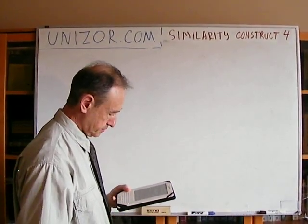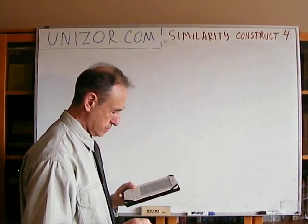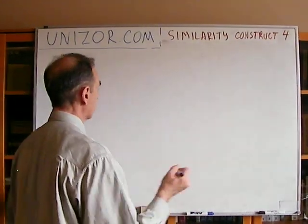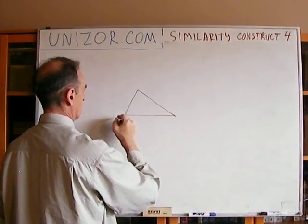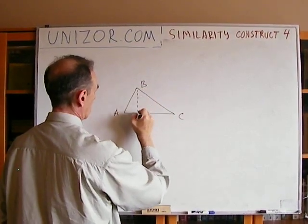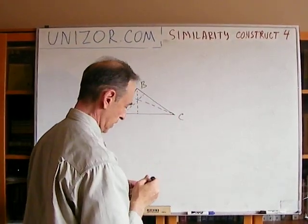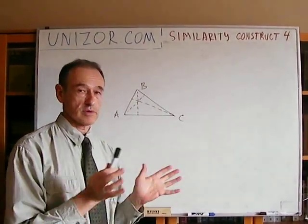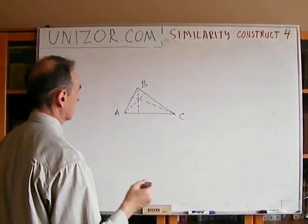Next problem: construct a triangle given its three altitudes. So we have to construct a triangle if we know its three altitudes. From the first glance, it's kind of not easy. But let's consider the following.